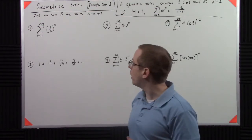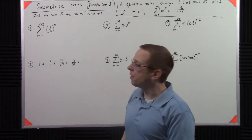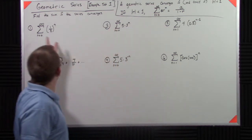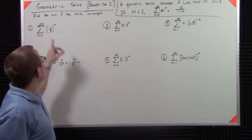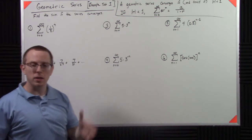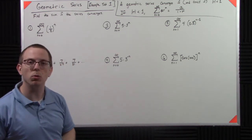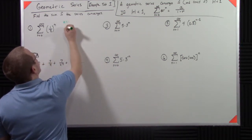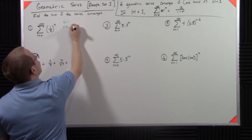So what we do, we say okay, I'm looking at this thing. Does the index start at zero? Yes. What's a? Well, if it's not listed explicitly, that tells me that a is equal to 1.